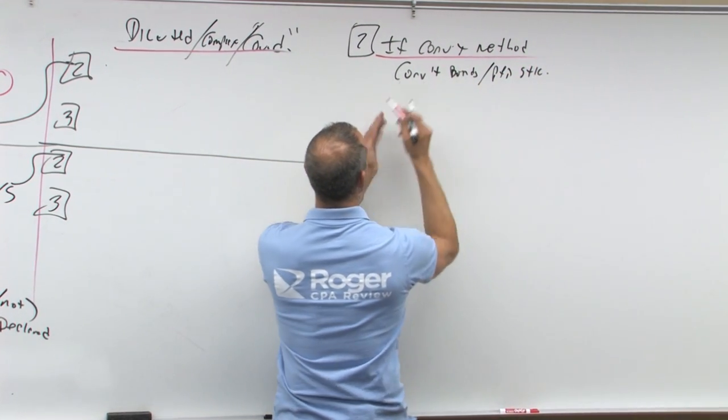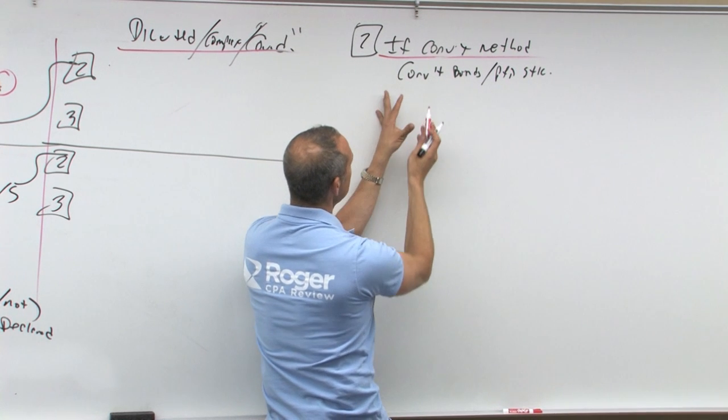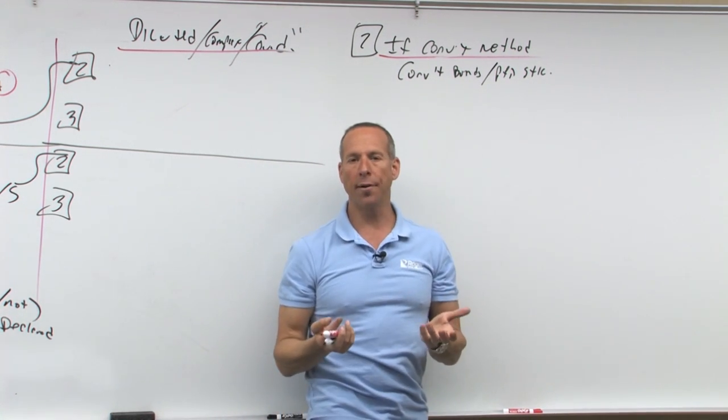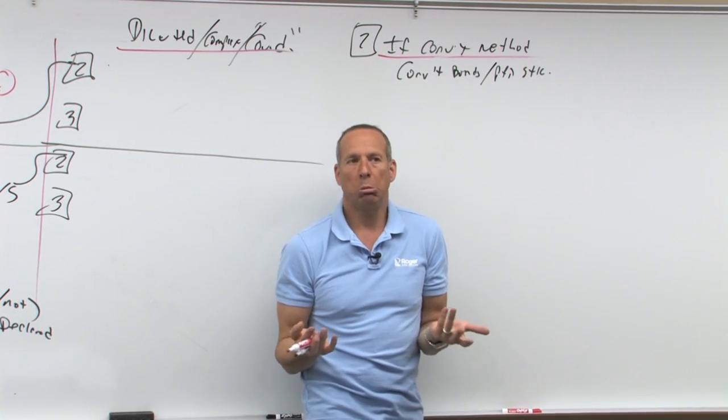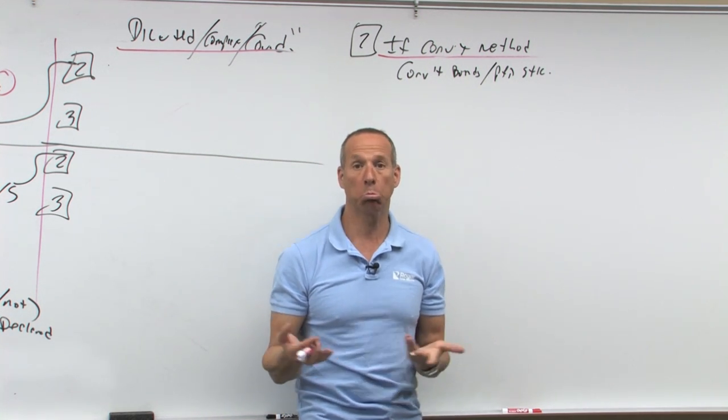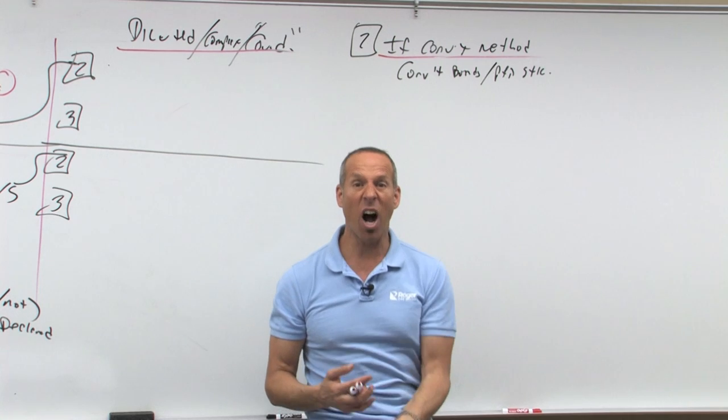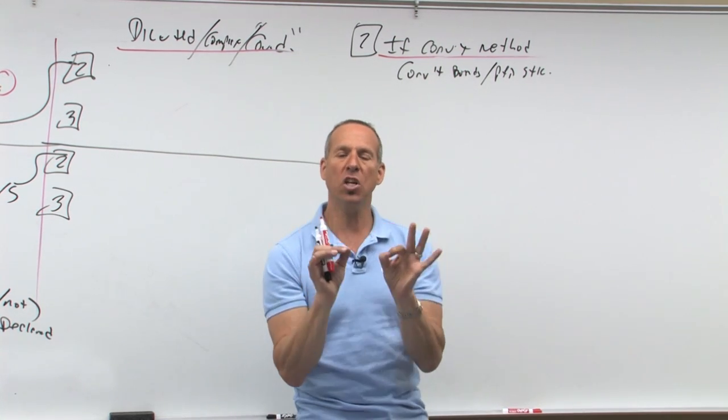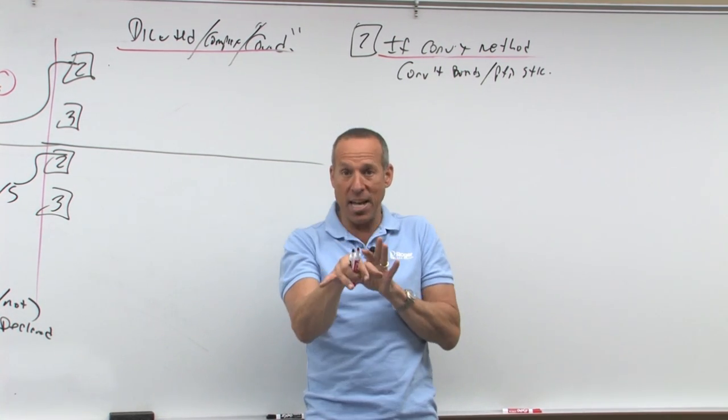So what it says is if they converted, what would happen? If you converted the bond, what would I not have to pay you? Interest expense. If you converted the preferred, what would I not have to pay you? Preferred dividends. What would you convert into? Common stock.